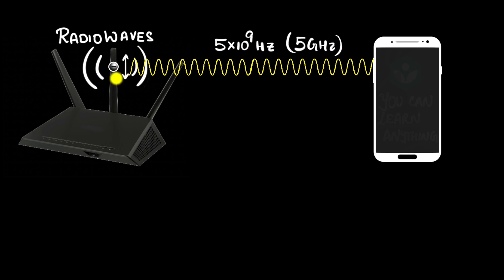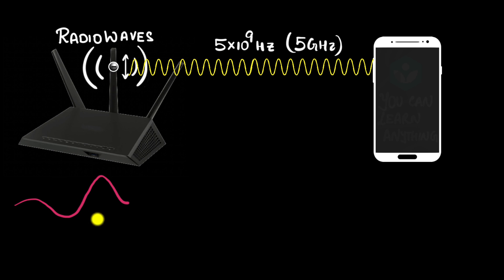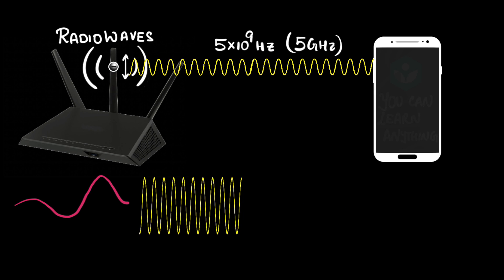To transfer information, we need to modulate the signal. For example, let's say this is a signal we want to send from the transmitter to the receiver — imagine radio transmitters and receivers, and this represents some song. What we do is take our radio wave and modulate it.